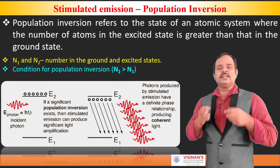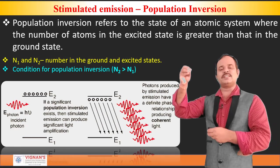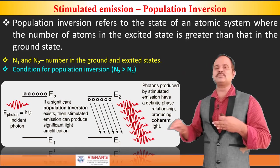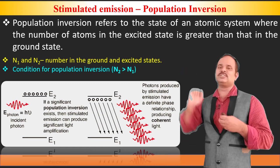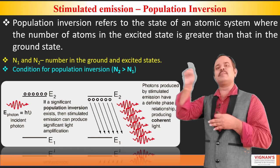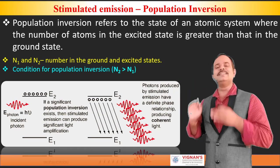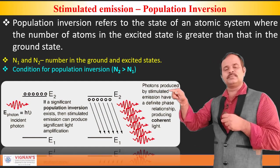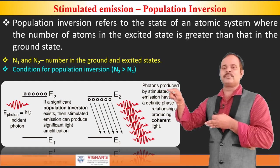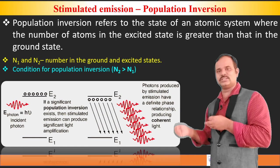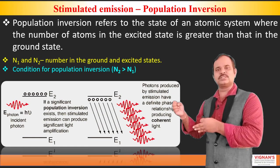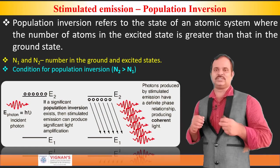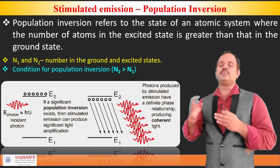Population inversion means it is the state of the system where more number of atoms are in the higher energy state compared to the ground state. As you keep incidenting more photons, more atoms in the ground state absorb the energy and go to the higher energy state. At some point of time, we can find that more number of atoms are in the higher energy state compared to the ground state — this state refers to population inversion. When we incident stimulating photons, we can de-excite all the atoms to the ground state at a time, so that we can get a large number of photons in coherence. That is what we require. In this way, we can get a lasing action. The condition required to get lasing action is population inversion.